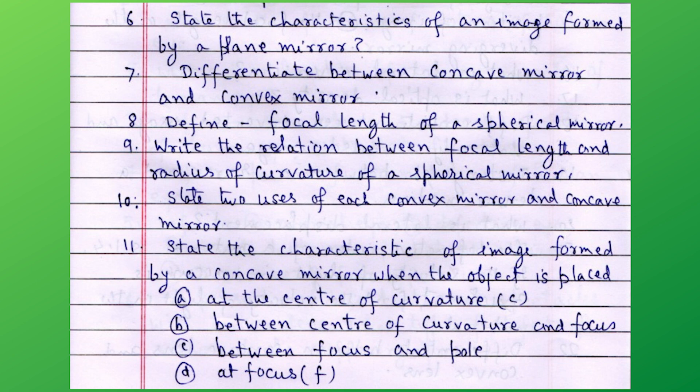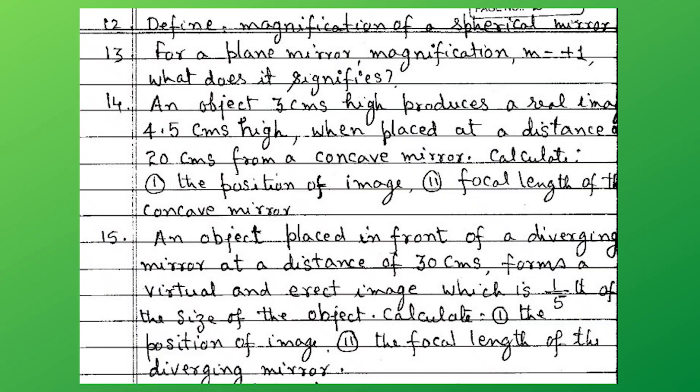State the characteristics of image formed by a concave mirror when the object is placed: A, at the center of curvature; B, between center of curvature and focus; C, between focus and pole; and D, at the focus. Define magnification of a spherical mirror or a plane mirror. Magnification M is equal to plus 1 — what does it signify?